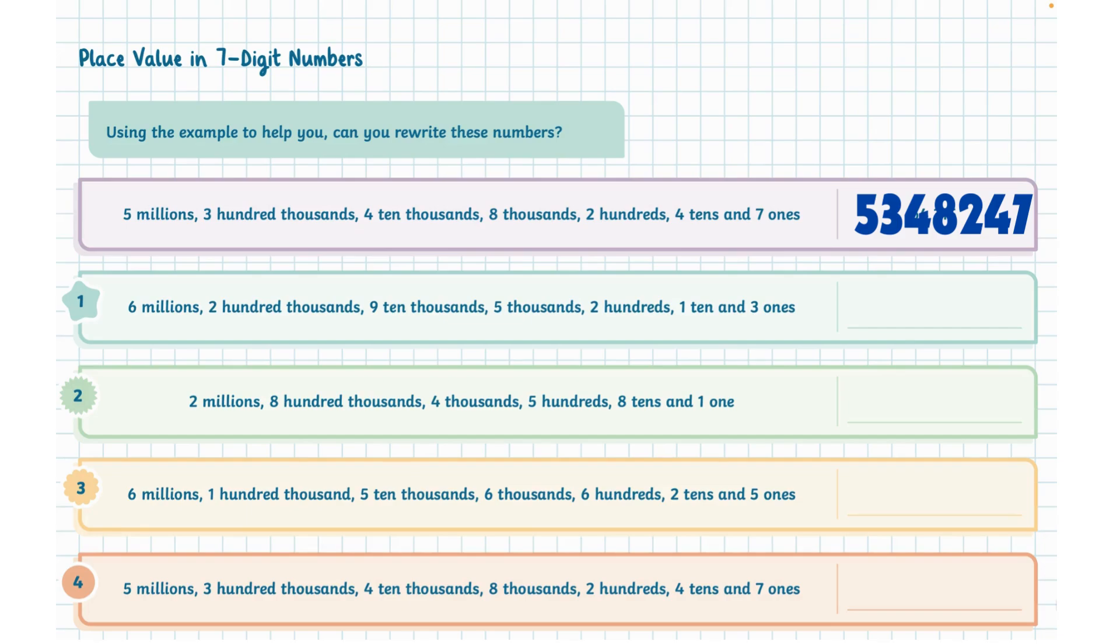Let's look at the first one. We have seven ones, four tens, two hundreds, eight thousands, four ten thousands, three hundred thousands, and five millions.